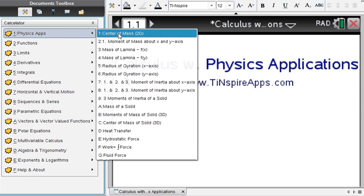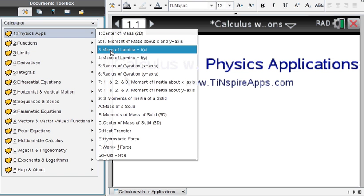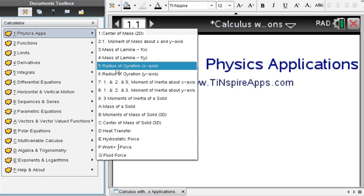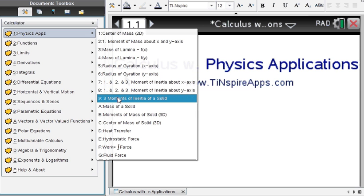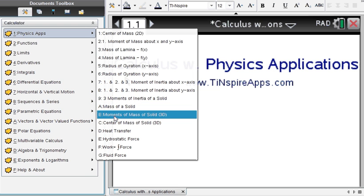So you can see we have center of mass in two dimensions, first moment of mass about x and y axis, mass of laminar f(x) and mass of laminar f(y), radius of gyration, the first, second, and third moment of inertia about the x and y axis.